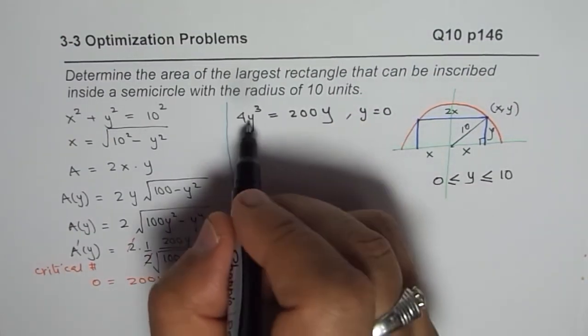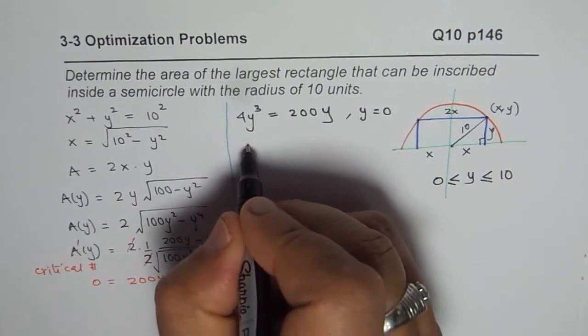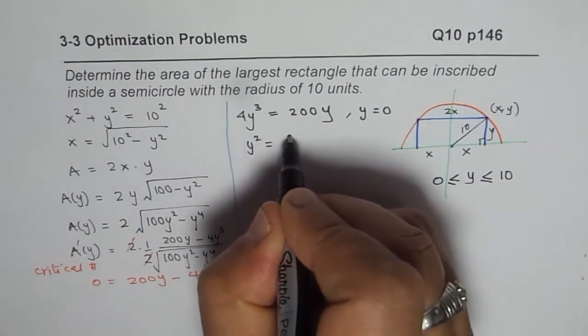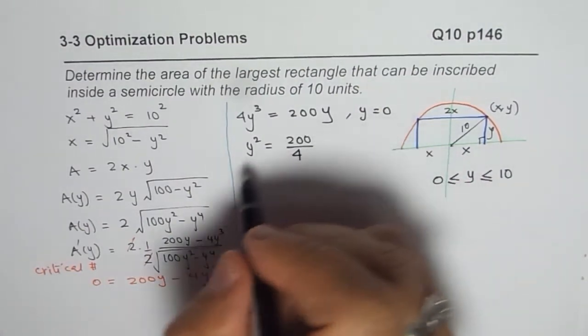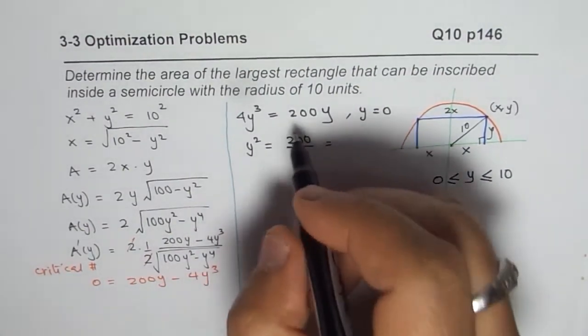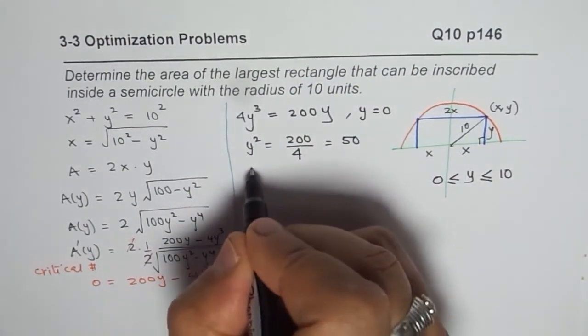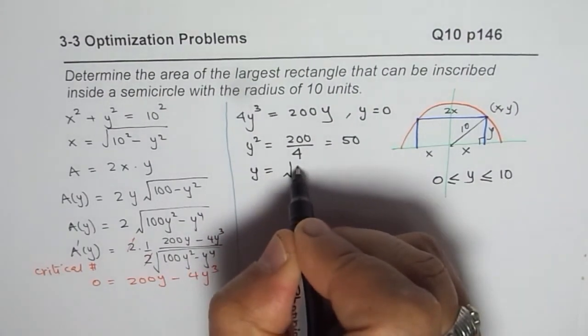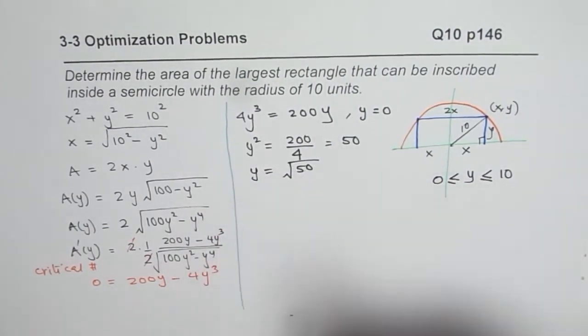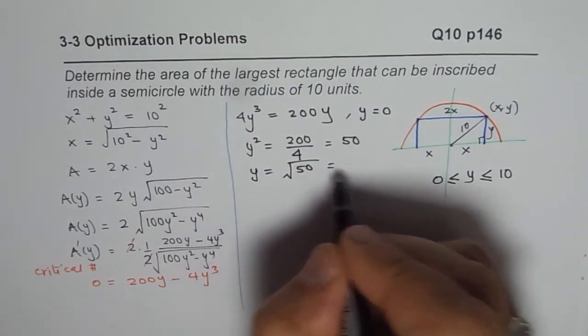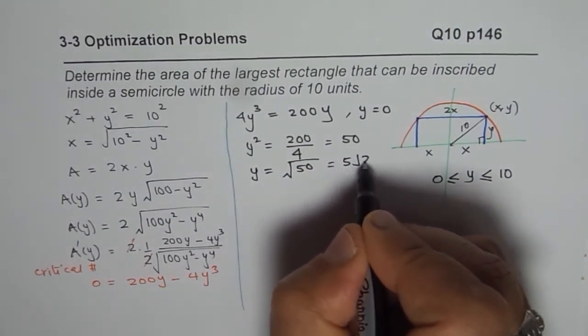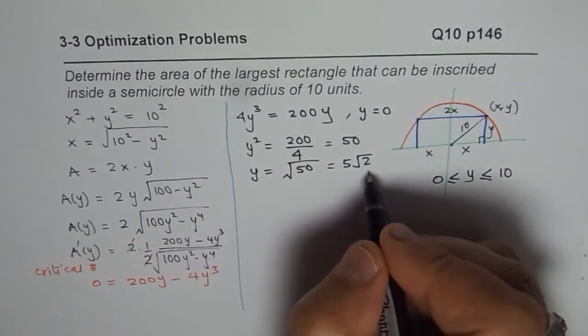The other solution will be we can cancel out y. So we have y squared equals to 200 over 4, which is 50. And that gives us y equals to square root of 50. So we are going to take the positive value, which indeed is 25 times 2, or you can write this as 5 square root 2. So that is the value of y.